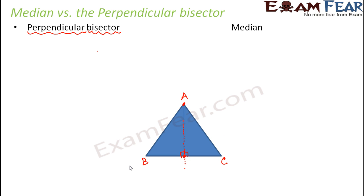In certain triangles, the median and the perpendicular bisector coincide. This happens as a special case of a triangle where all sides are equal — yes, an equilateral triangle. So in an equilateral triangle, the perpendicular bisector and the median coincide and are represented by the same line.